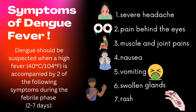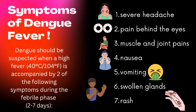What are the main symptoms of Dengue Fever? Dengue should be suspected when a high fever is accompanied by two of the following symptoms during the febrile phase, around 2–7 days: severe headache, pain behind the eyes, muscle and joint pains, nausea, vomiting, swelling glands, and rash.